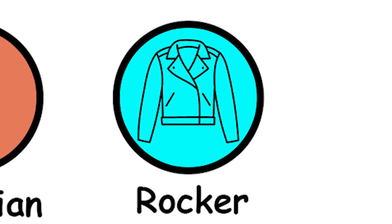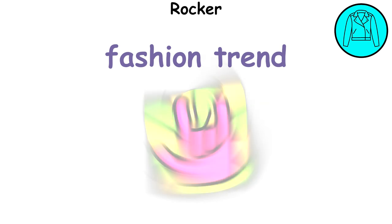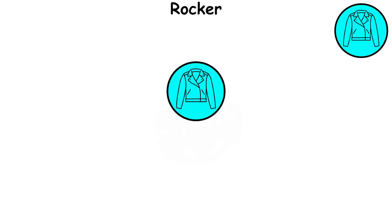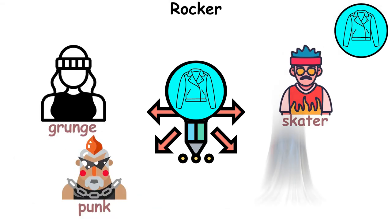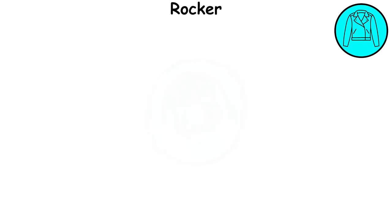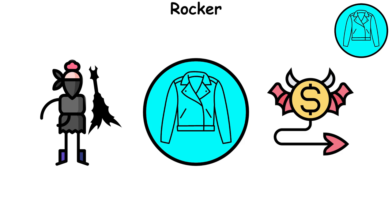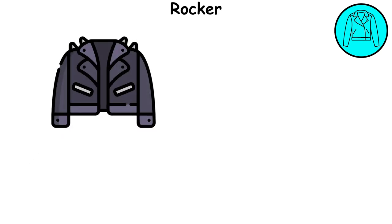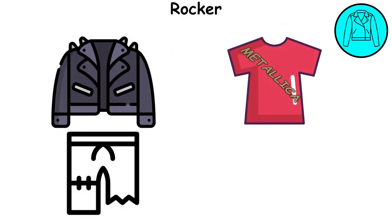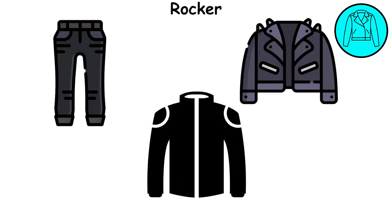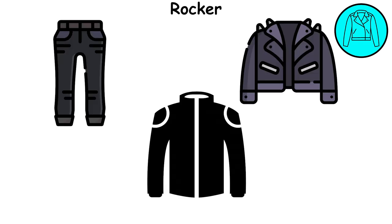The rocker style is a fashion trend that has been influenced by the aesthetics and spirit of rock music. It's a style that's as varied as rock music itself, with sub-styles including grunge, punk, skater, and chic rocker. The rocker style is characterized by its rebellious and edgy look. Key elements include leather jackets, band t-shirts, ripped jeans, and boots. The color black often dominates the rocker style, symbolizing its casual and rebellious demeanor.